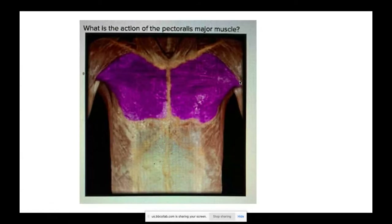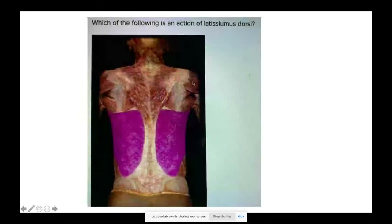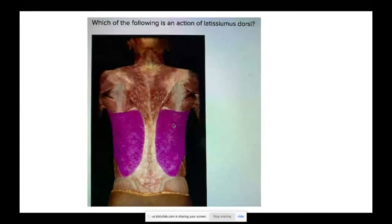The latissimus dorsi, although a back muscle, inserts into the humerus and is a powerful shoulder extensor — think pulling a lawnmower cord or doing a pull-up. Much like pectoralis major, it is also an adductor of the shoulder. For a review of ranges of motion, check the YouTube channel for demonstrations.